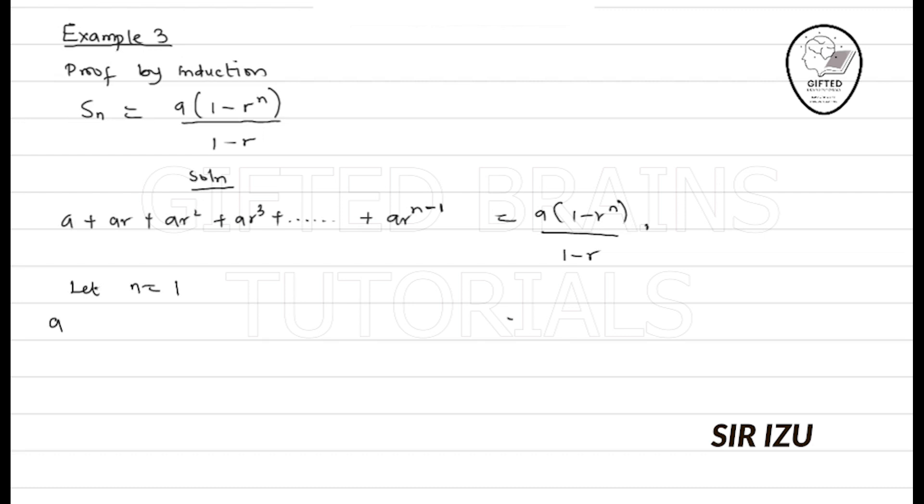And then on the right-hand side, because that is the first thing, we have A into bracket 1 minus R. Anyway, I see n, put 1, all over 1 minus R. At the end of the day, obviously, you see that this gives us A into 1 minus R over 1 minus R, since R to the power 1 is R. So this is what we have. At the end of the day, this will eliminate this, and then we're left with A. So left-hand side gave right-hand side.